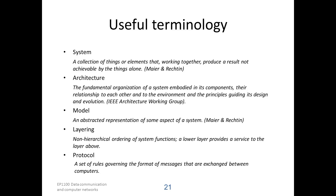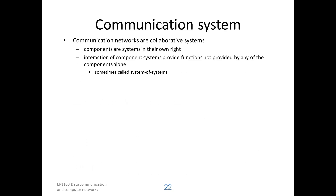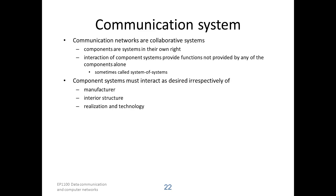We are now ready to reason about communication systems. Communication networks are collaborative systems. The component systems are systems in their own right — for instance, the computers that are connected together by a network are fully functional computers. But the interaction of component systems provide functions not provided by any of the components alone. This is sometimes called systems of systems. The component system must be able to interact as desired, irrespective of who has manufactured the system, the interior structure of the system, and the realization of technology.